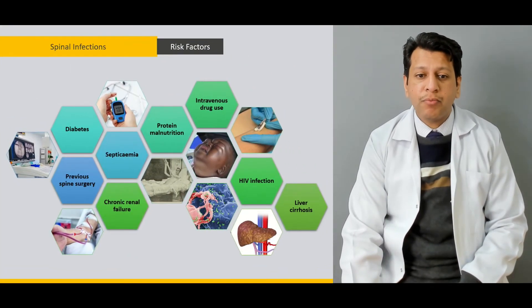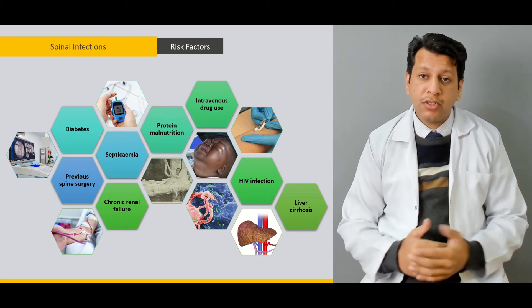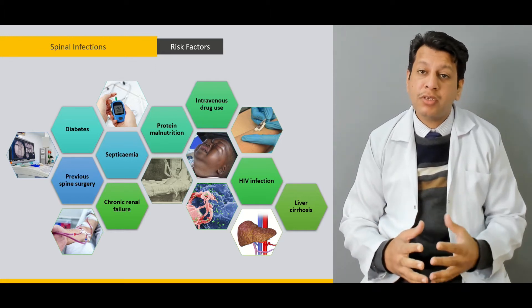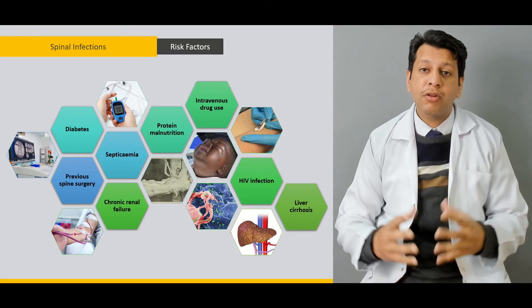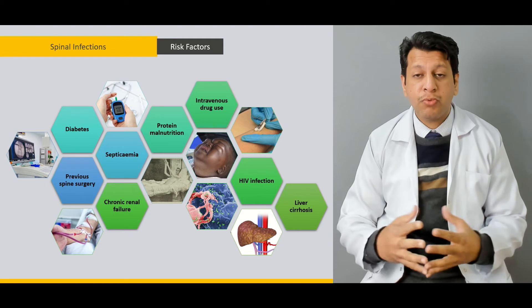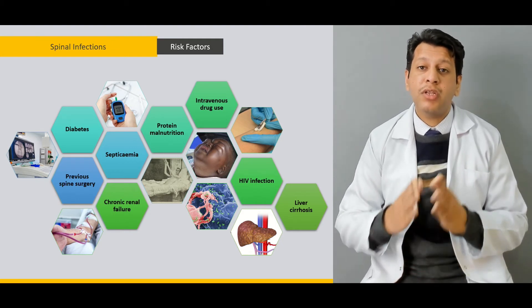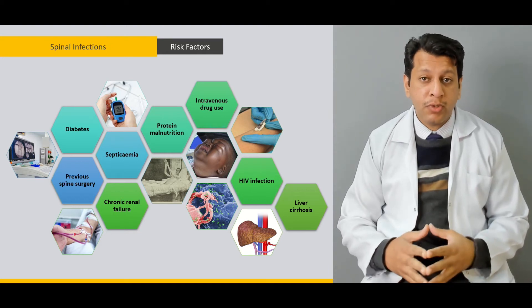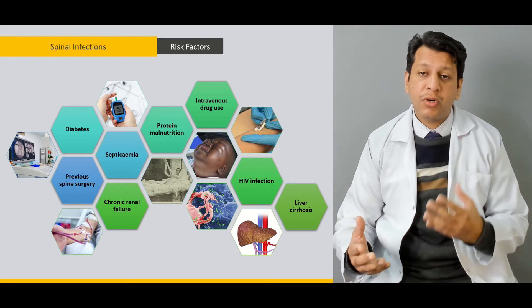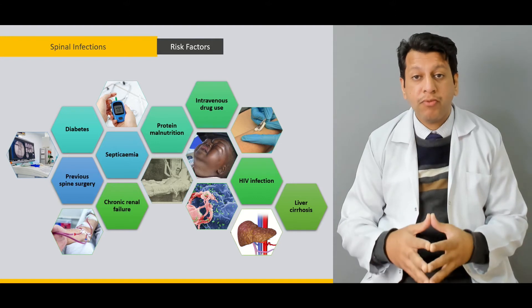From then onwards we will move on towards the risk factors of spinal infection. As you know, HIV is quite rampant, and due to the immunocompromised state of patients, tuberculosis has re-emerged — the giant has awakened again — especially in the developing world, with a lot of spinal infection with tuberculosis. This resurgence is mainly attributed to the spread of HIV. We'll also briefly discuss other causes and risk factors which may lead to spinal infection.